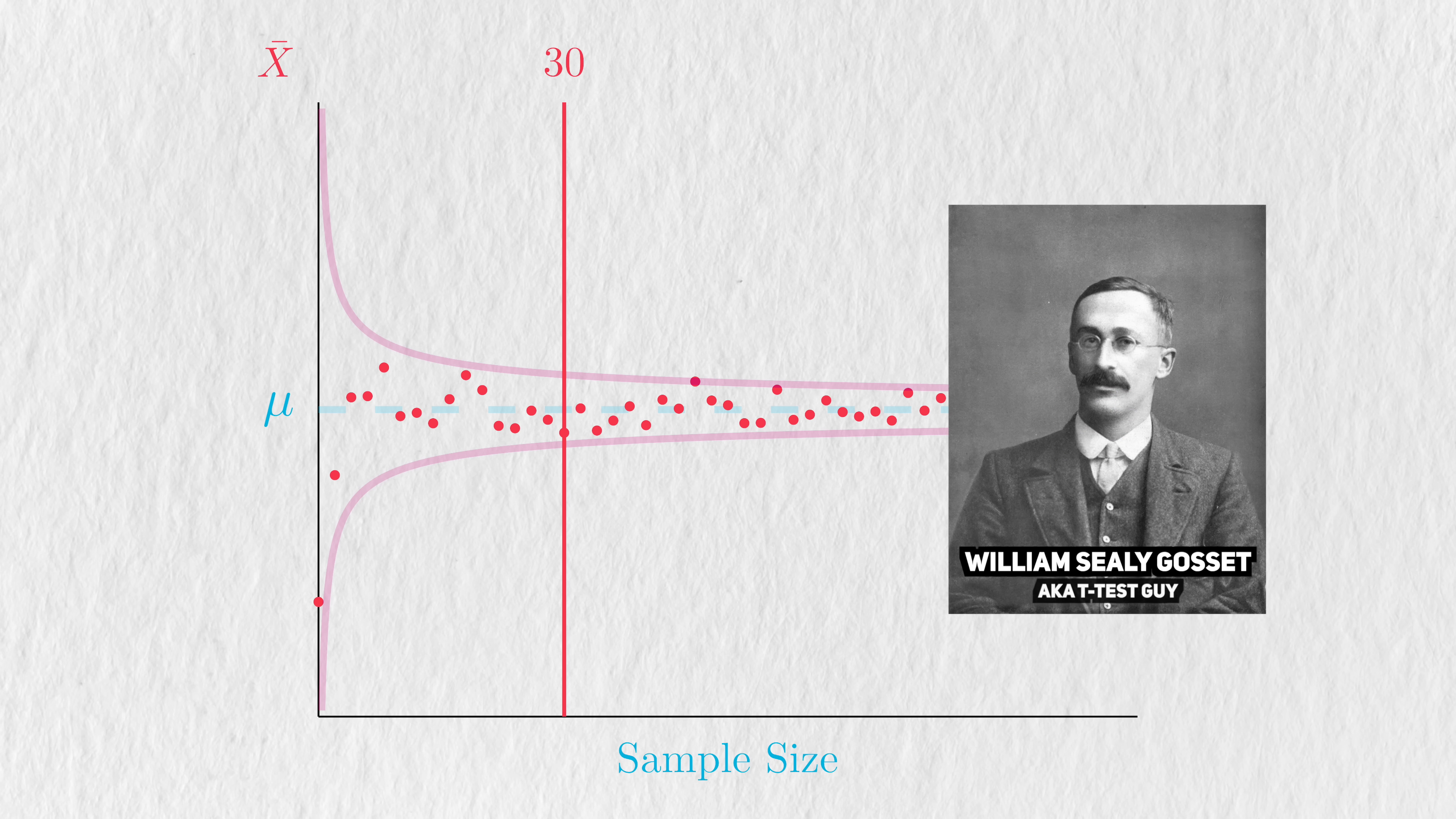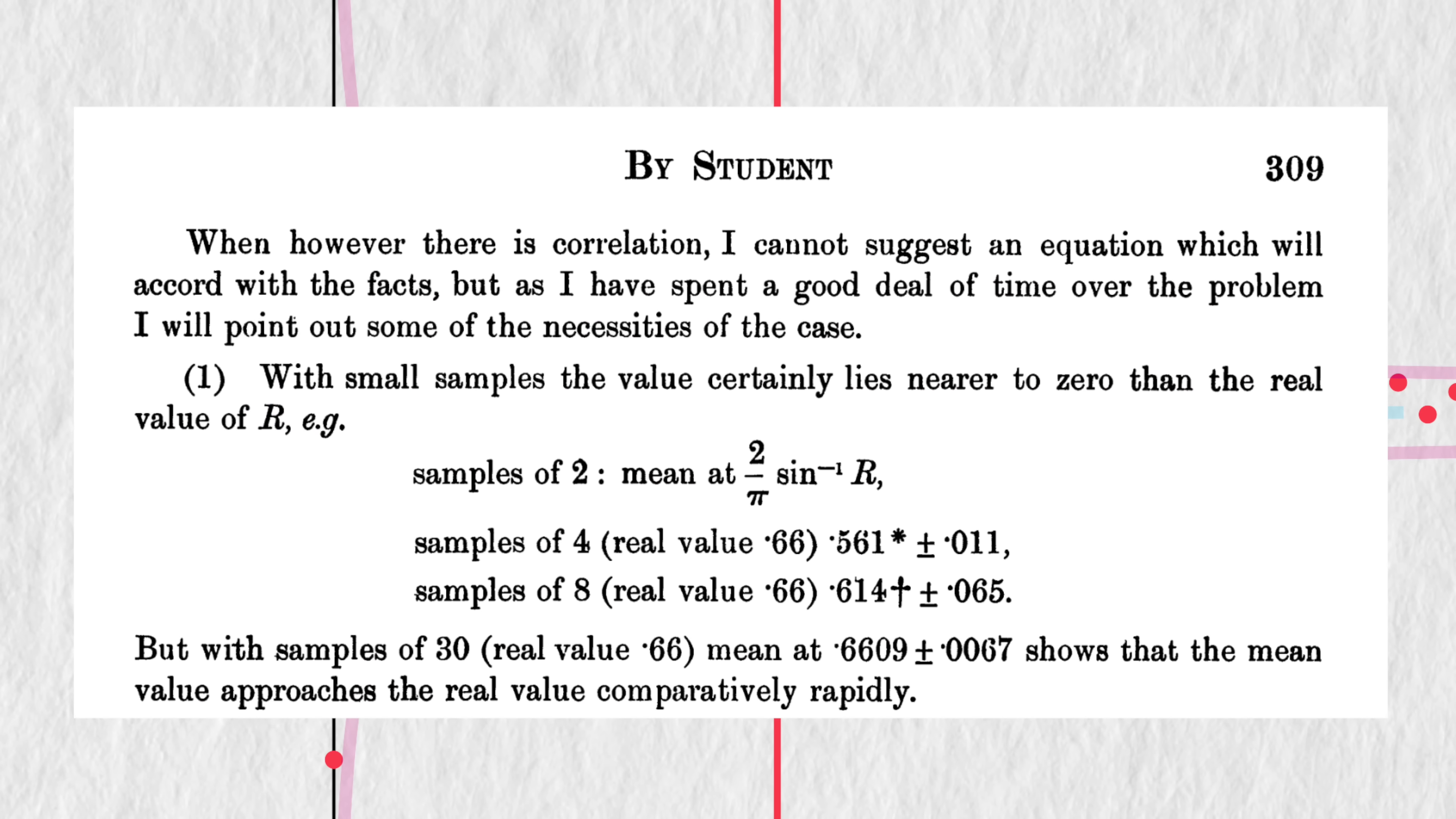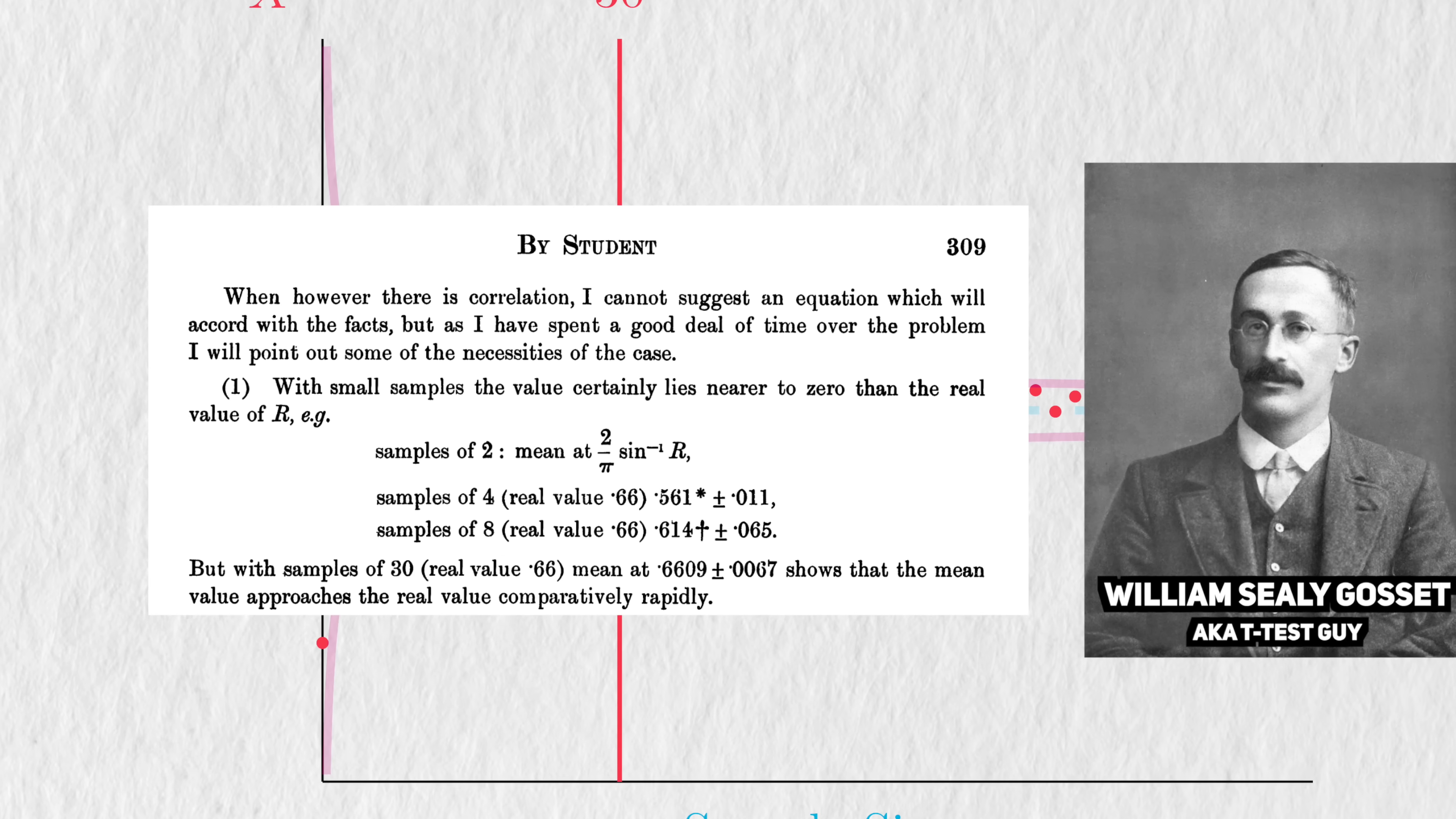William Gossett, the father of the t-tests, commented on this way back in 1908. In studying how to estimate the correlation coefficient, he noticed that the mean value approaches the real value comparatively rapidly with samples of 30. And that's all he said about that.